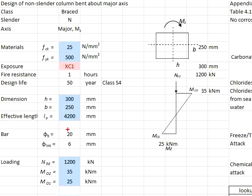The bar size is set as 20 mm and the link is 6 mm. The column is subjected to an axial load of 1200 kN and bending moments of 35 and 25 kNm.